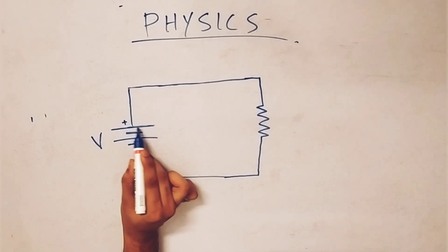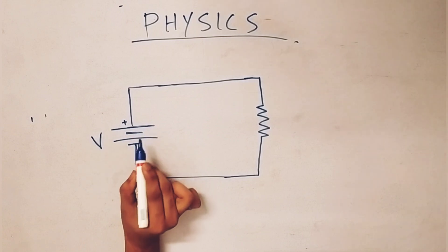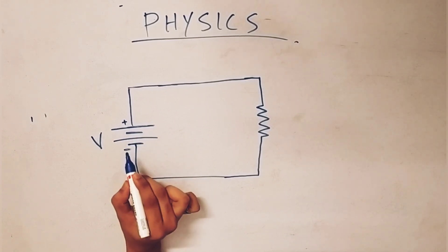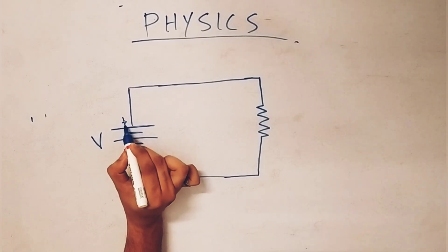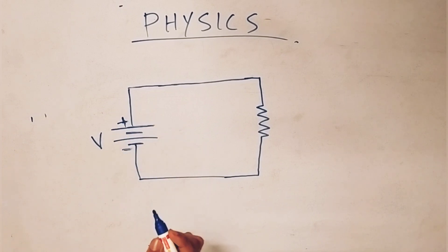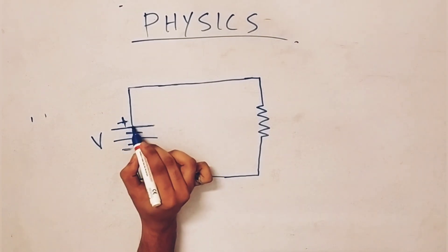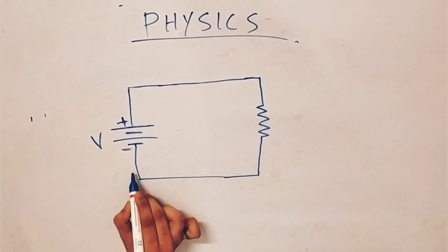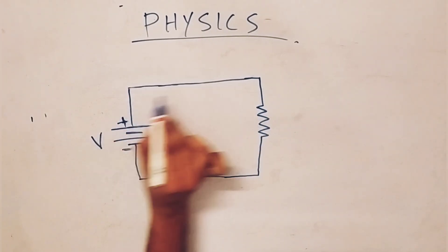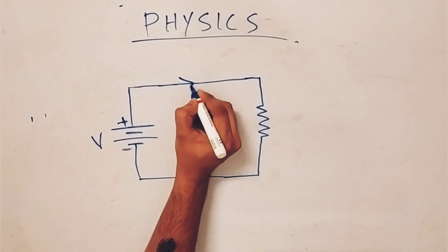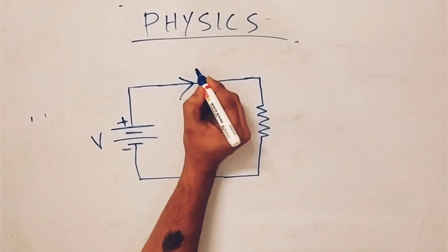The current flows from positive to negative. The current is passing. The current is denoted by the letter I.